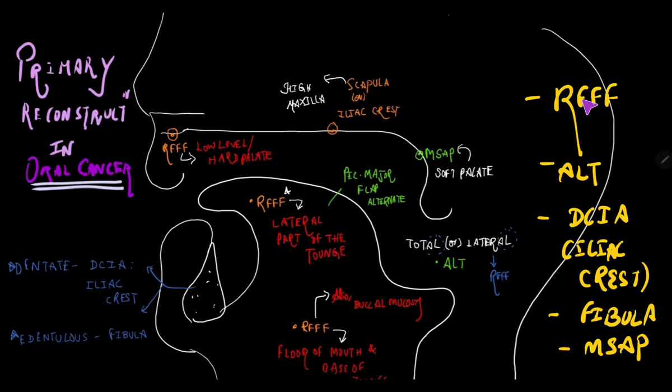These are all the list of some primary reconstruction. But to remember it, let us take like RFFF. R for roof, F for floor. So in roof, what we have, the hard palate. So for hard palate, it is RFFF. And for floor of mouth, for base of tongue, for buccal mucosa, as well for lateral part of tongue reconstruction, we use RFFF.